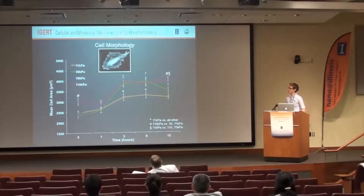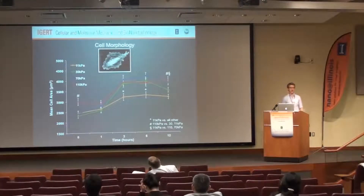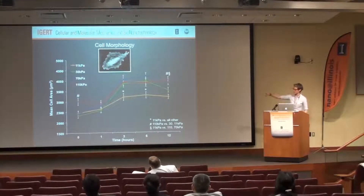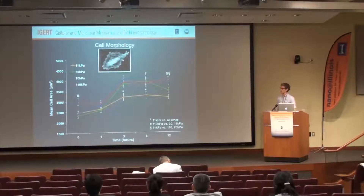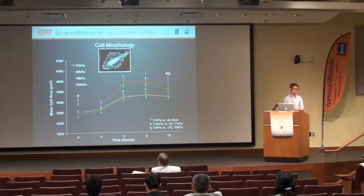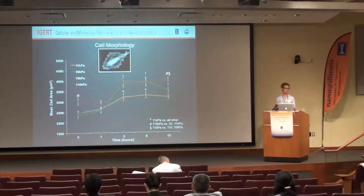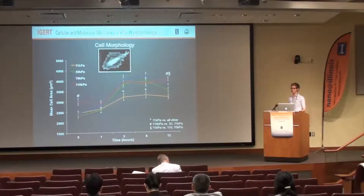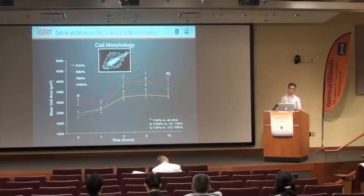One of the first things we noticed is that on different stiffnesses you have different cell spreading — as expected. Looking at the red line for the stiffest substrate at 110 kilopascals, cells spread out more and are in contact with a greater area of the substrate, so they potentially have greater capacity to sense the strain they're experiencing because there are more focal adhesions attached to the actin cytoskeleton, and that difference is maintained over time.